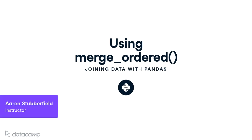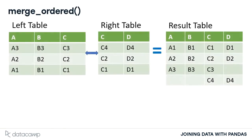Welcome back. In this last chapter, we will start discussing Merge Ordered. This method can merge time series and other ordered data. The Merge Ordered method will allow us to merge the left and right tables shown here. We can see the output of the merge when we merge on the C column. The results are similar to the standard merge method with an outer join, but here the results are sorted, making this a useful method for ordered or timed series data.